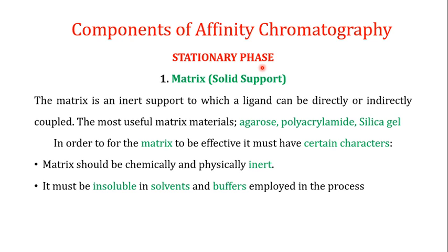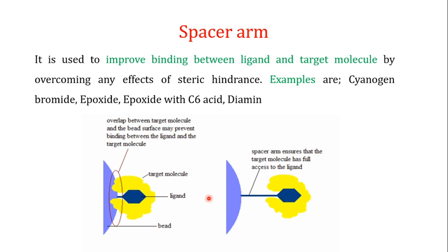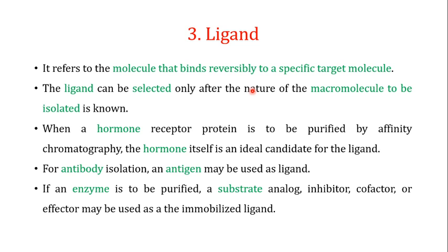The first component was the stationary phase — the matrix — which should have certain characteristics we discussed in detail. The second component was the spacer arm, which improves binding between the ligand and target molecules by overcoming steric hindrance. Examples include cyanogen bromide, epoxide, epoxide with C6 acid, or diamine. The ligand is selected based on the nature of the macromolecule of interest.